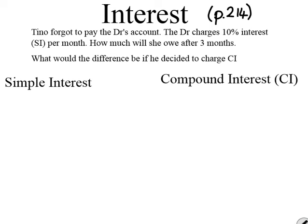I'm going to start with simple interest because compound interest is based on simple interest. So if we take this scenario: Tina forgot to pay the doctor's account, he charges 10% interest per month. How much will she pay after three months? Interest is a percentage of the amount owed. She owed 560 Rand.